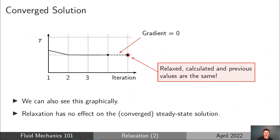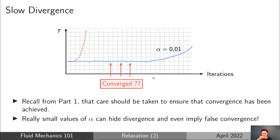Graphically, when fully converged, the gradient is zero, so regardless of whether we use explicit or implicit relaxation, the relaxed and calculated values are identical to the value of the previous iteration. An important caution: reducing the relaxation factor to a very small value could result in slow divergence or false convergence, where the solution appears converged simply because it's not changing much — but this could be disguising a slow divergence. Be extra careful when changing relaxation factors in your simulations.